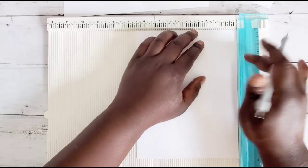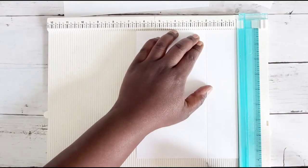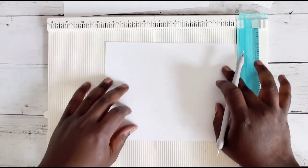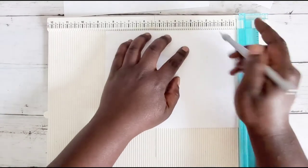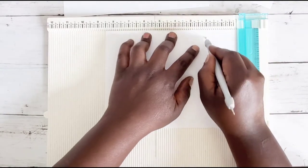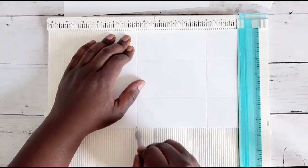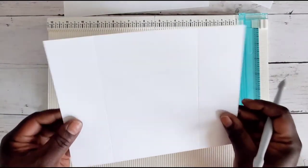And on the 6.5 inch side we're going to score it at 2 and at 4.5. Then we're going to rotate it and we're going to score it at 2 and 6.5.